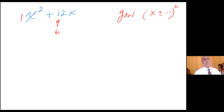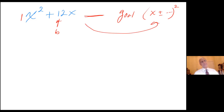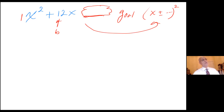In this case, c is 0 — there is no c. But wouldn't that be nice if I had a c in here, something that I could turn this into that expression. It turns out that the magical quantity that I need for my c to complete the square is one half of b, quantity squared.